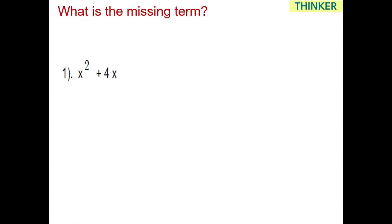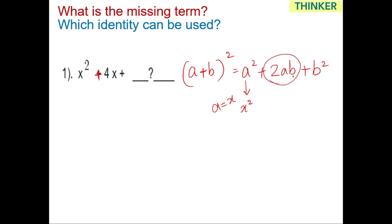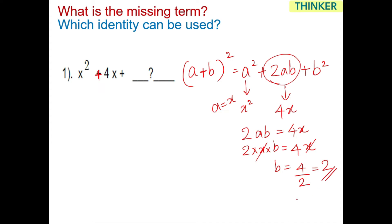First, identify the missing term and which identity to use. Since there's a plus sign, I'll use a plus b, the whole square, equal to a squared plus 2ab plus b squared. Here a is x, and the 2ab term is 4x, so 2 times x times b equals 4x, meaning b equals 4 divided by 2, which is 2. Quick trick: when the coefficient of x squared is 1, simply divide the coefficient of x by 2 to find b.